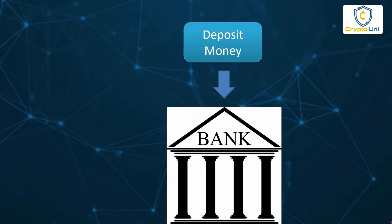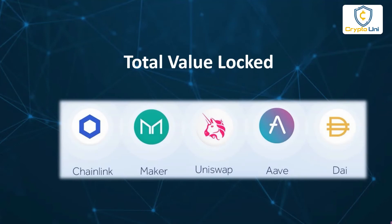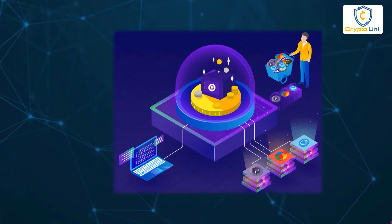How many people deposit money to a bank and how much amount is deposited shows how trustable it is and how big it is. Similarly, in the DeFi world, total value locked defines how many people already trust in it and how big it is. So total value locked becomes a reference point to track the DeFi system.